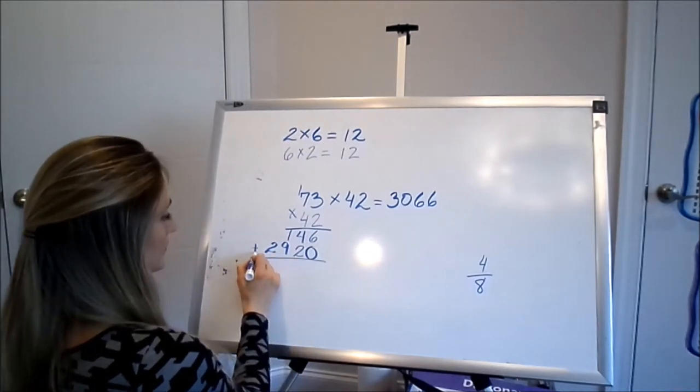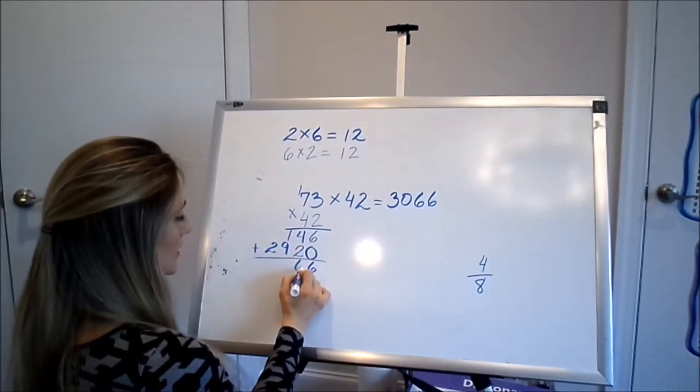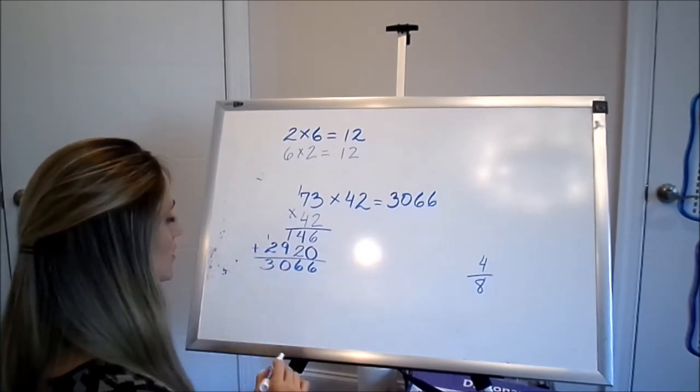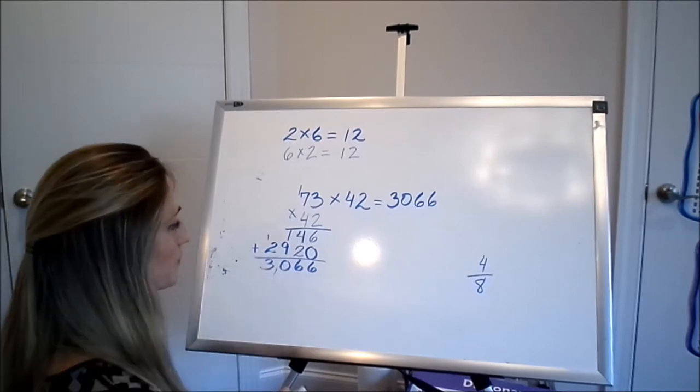And then add 6 and 6. That's a 1, I'm going to carry just like I normally would. So that's how I got my 3066.